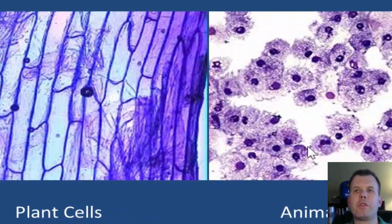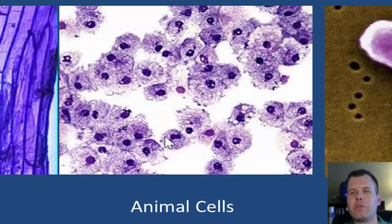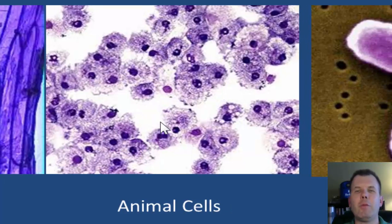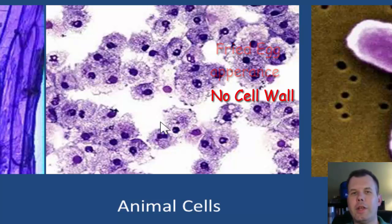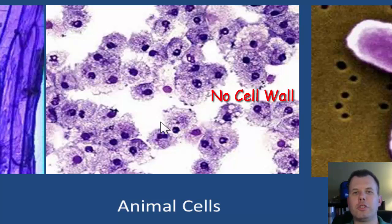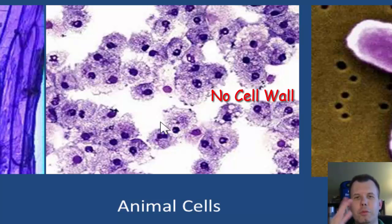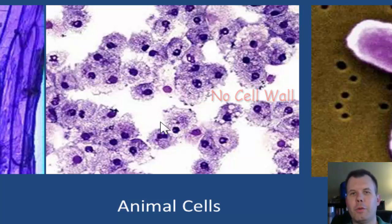Animal cells are slightly different. We worked on these as well — we did our cheek cells, scraped the sides of our cheeks, and put those on a slide. I like to describe them as having a fried egg appearance, because our cells lack a cell wall. We do not have cell walls that give us that nice structure that plant cells do. Our cells are allowed to more freely move around and have their own structure and function, giving them a more irregular appearance.